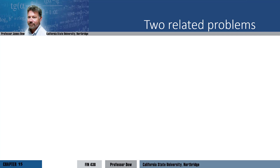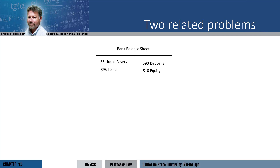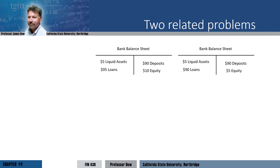We need to distinguish between two different problems a bank can have. Let's start with a bank that has $90 of deposits, $10 of equity capital, $95 of illiquid loans, and $5 of liquid assets. Say that the economy enters a recession and the value of its loans falls to $90. The total value of the bank's assets is $95, so the value of the bank's equity capital falls to $5. Notice that the bank still has enough assets to cover all of its depositors. The equity capital provides a cushion if the value of the bank's assets fall.